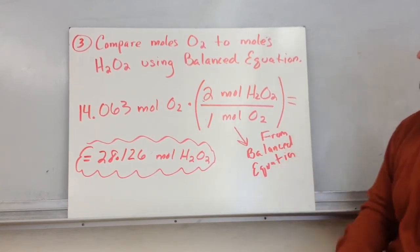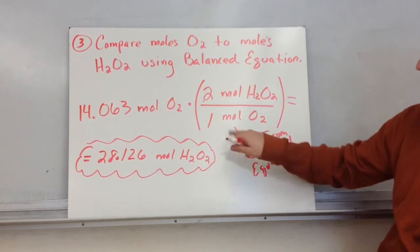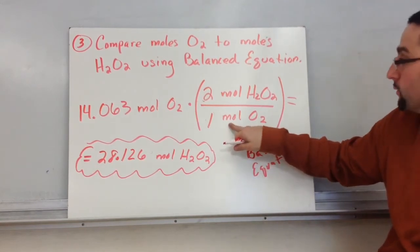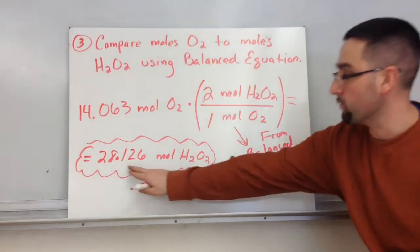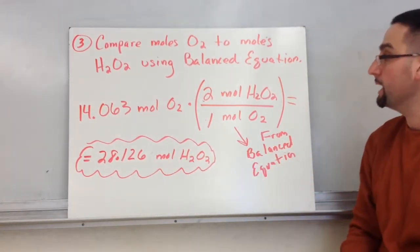All right, so we have this many moles of O2. For every one mole of oxygen that reacts, we get double the moles of peroxide. So I get 28.126 moles of H2O2.